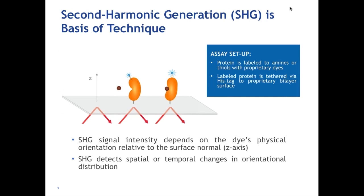The first question, of course, is how does the technology work? Our technology is based on a technique called second harmonic generation. This is an optical technique that is well-known in physics and physical chemistry. We are applying it for the first time to study molecular biology. The way the technology works is we take a protein — it can be histagged. We're also working on avi-tagged surfaces, but for now all of our proteins are histagged.